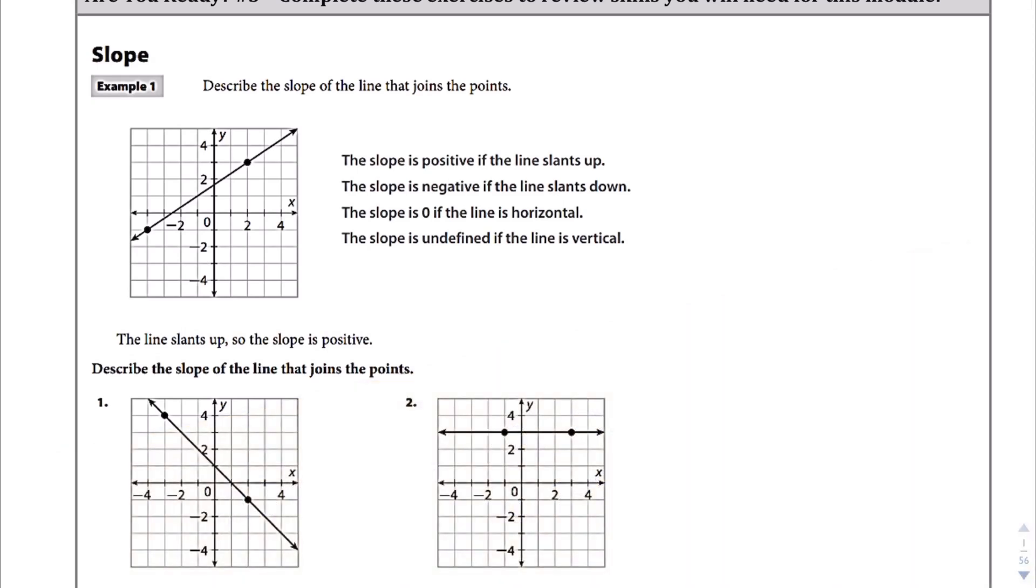Okay, so we're on Algebra 1A Credit 3, pages 7 and 8. Let's jump into this. We're talking about slope and we're asked to describe the slope of the line that joins the points. We're not actually looking for the slope just yet, we just want to know if it's positive, negative, if it's a slope of zero, or it's undefined.